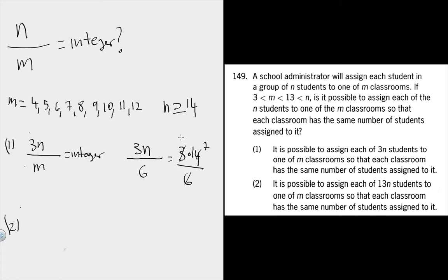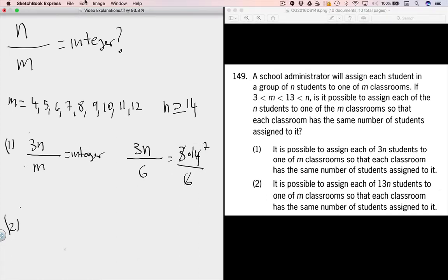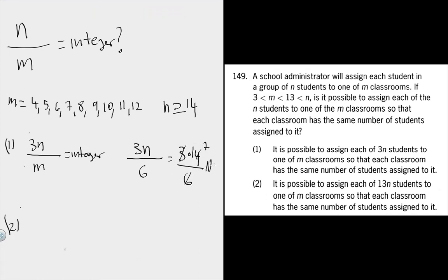But if we just have n over m, not 3n over m, just the n over m part - 14 over 6 - that would be a no. n over m is certainly not an integer. So this gives us a no for our question.